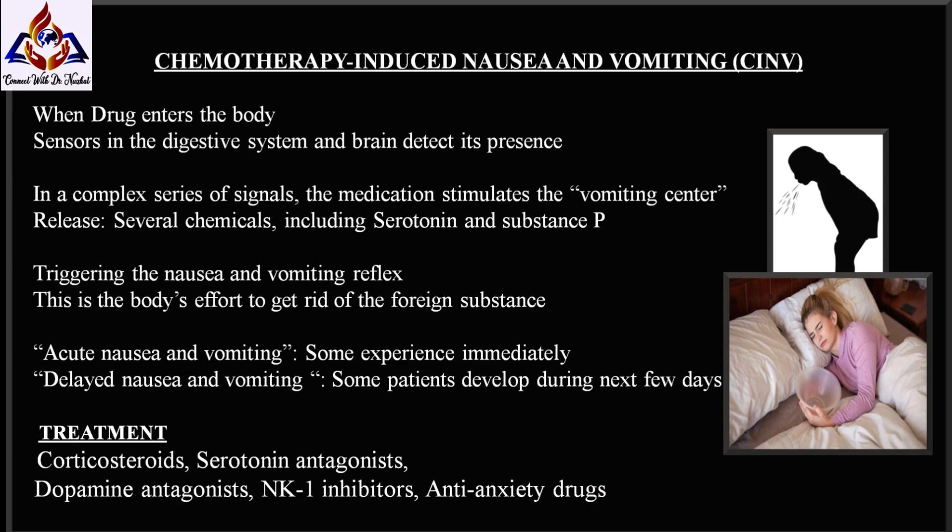NK1 inhibitors are the newest class of medicines to prevent chemotherapy-induced nausea and vomiting. They work by blocking the binding of substance P and preventing the emetic signal from being transmitted. It is available as a capsule called aprepitant, taken before a chemotherapy session and for two days afterwards. Fosaprepitant is the IV version and is converted to aprepitant in the body.